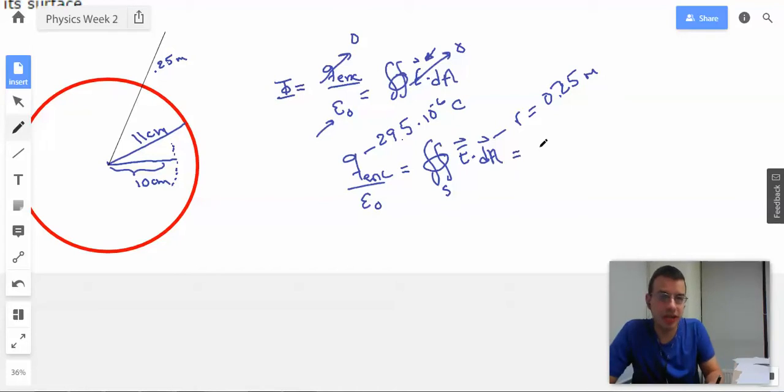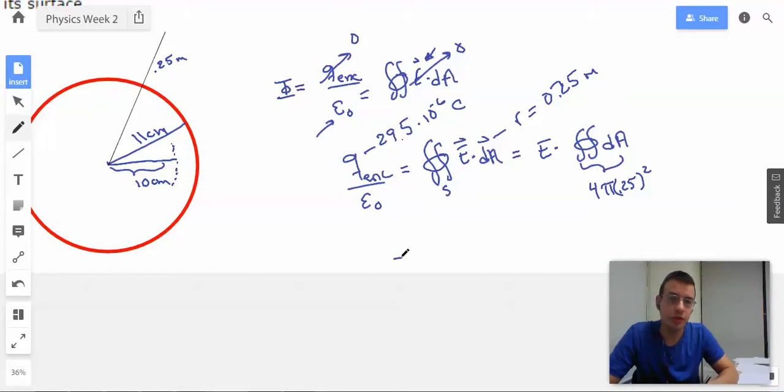We're going to rearrange this as E times integral dA. The surface area of the sphere at 25 centimeters will be 4πr squared, or 0.25 meters squared. Rearranging this, we find that the electric field equals 1 over 4π epsilon naught times Q enclosed, which is 29.5×10⁻⁶ coulombs, divided by 0.25 squared, because that's the radius.